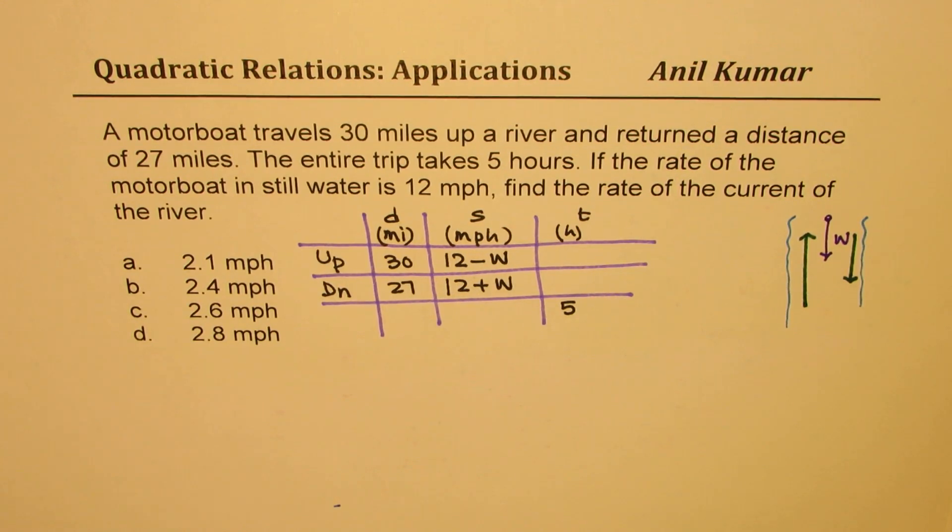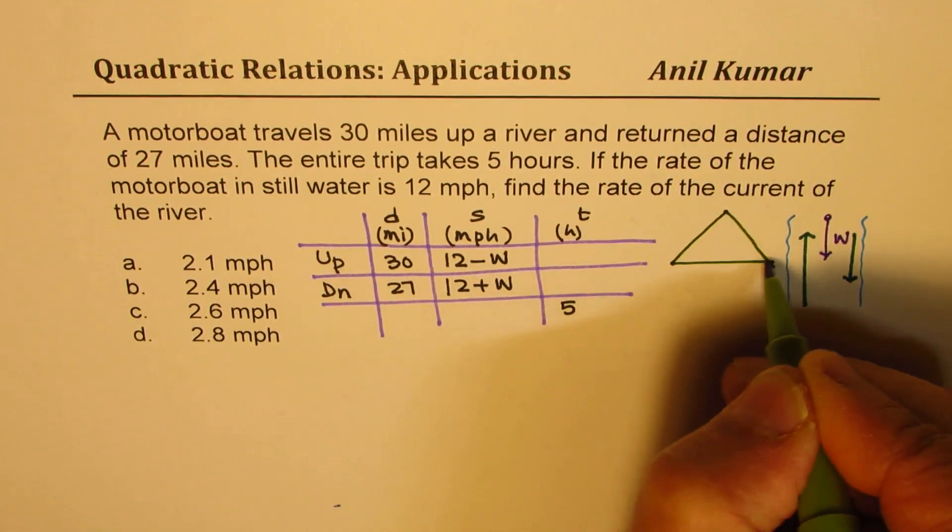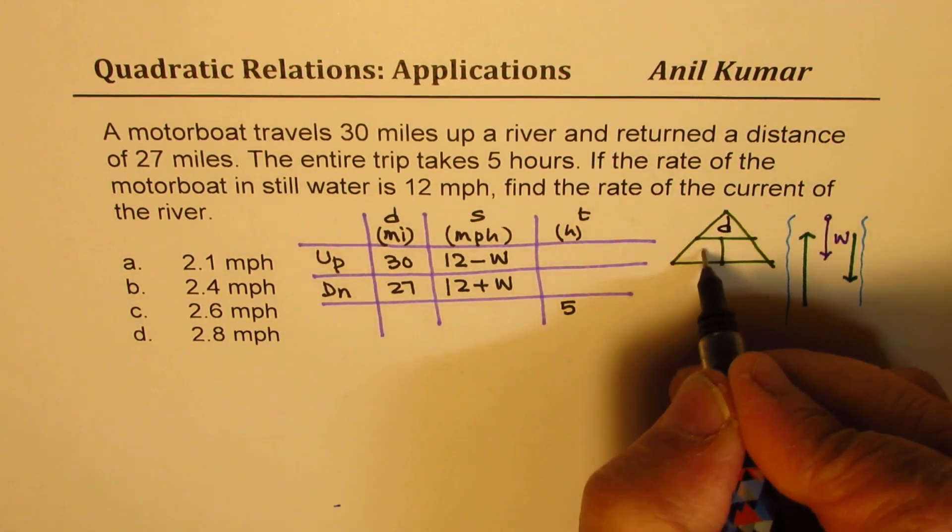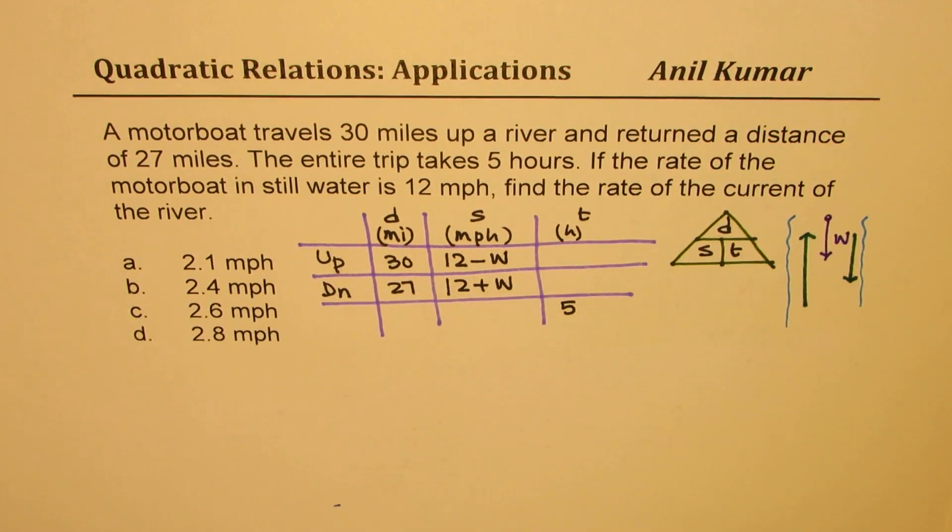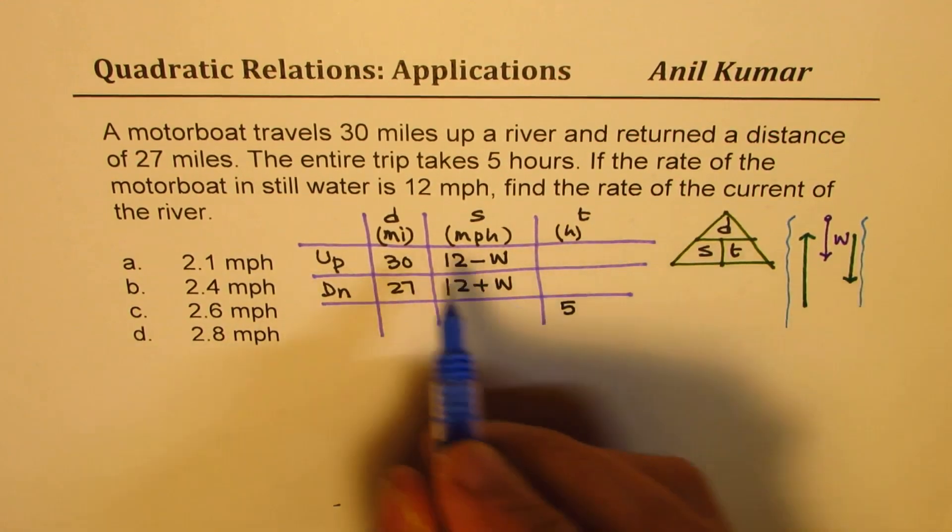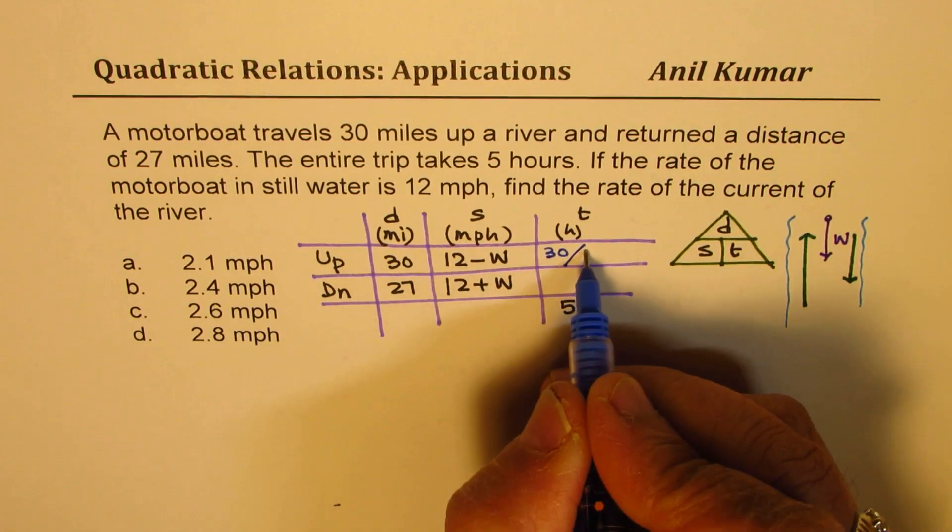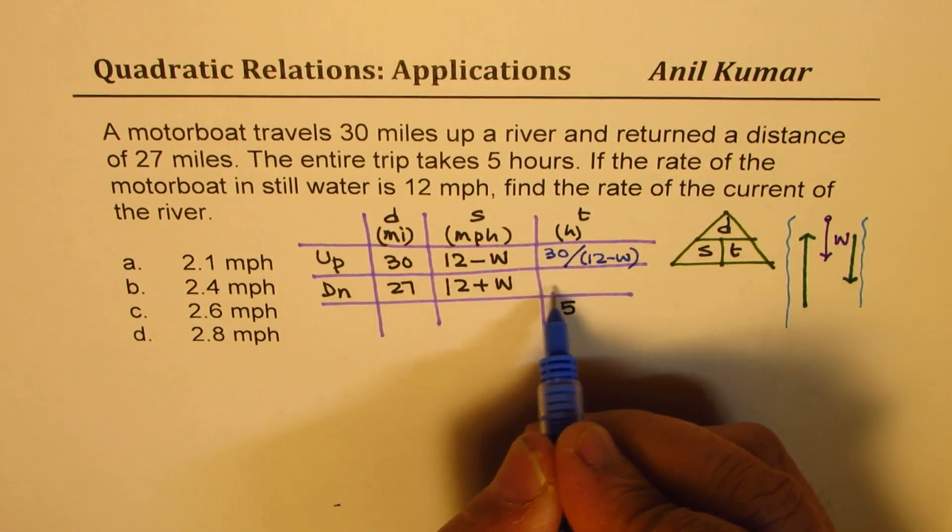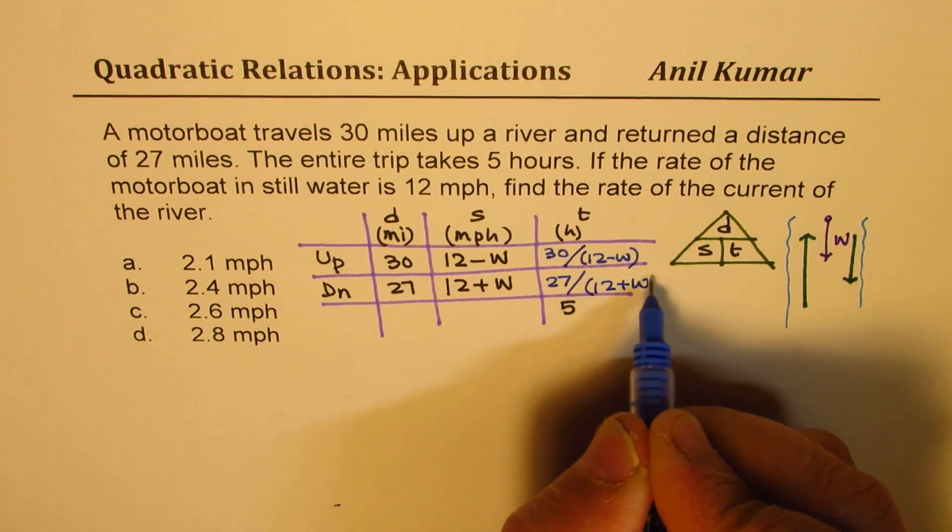How do we form an equation? Well, we know the relation between distance, speed and time. Let me write down to help you. This is a standard relation which we can represent in this triangle, distance, speed and time. Time is ratio of distance and speed. So I could write this time for going up as distance of 30 divided by the speed of 12 minus w. While coming down, it comes faster, distance of 27 divided by 12 plus w.